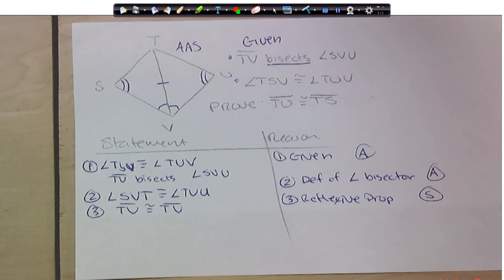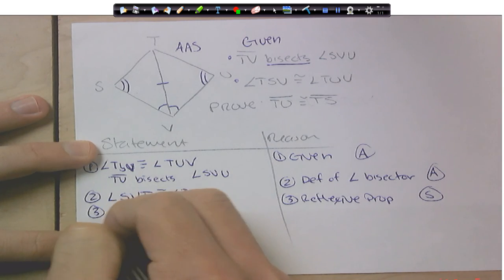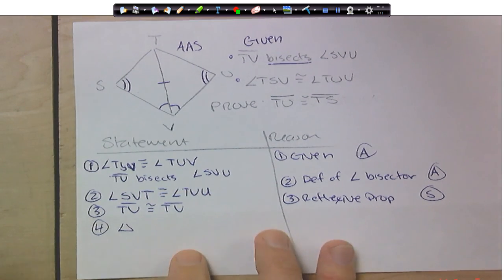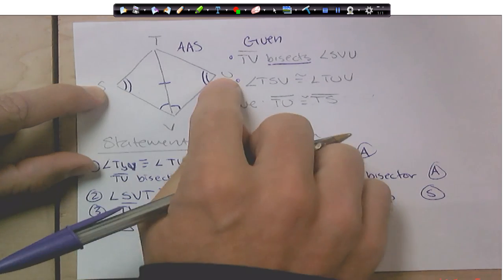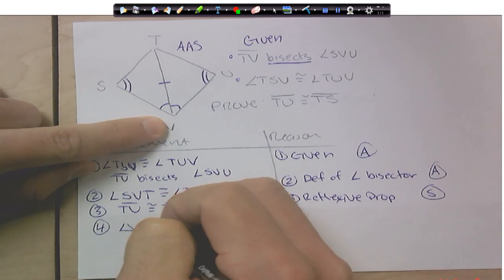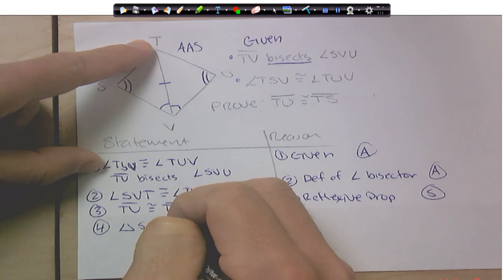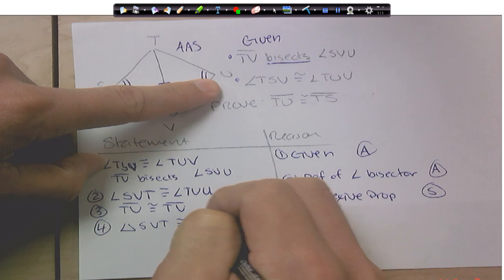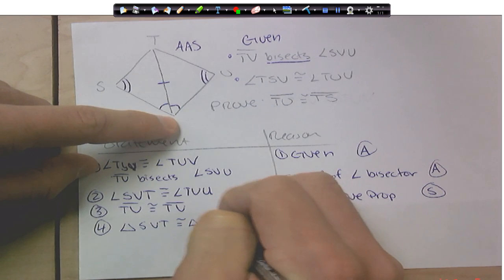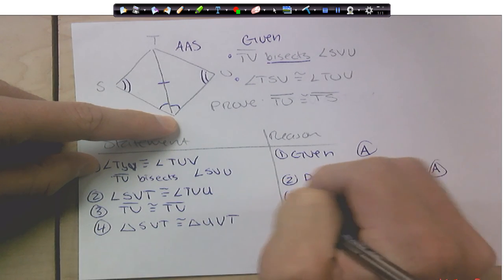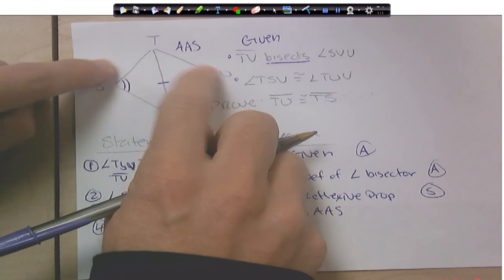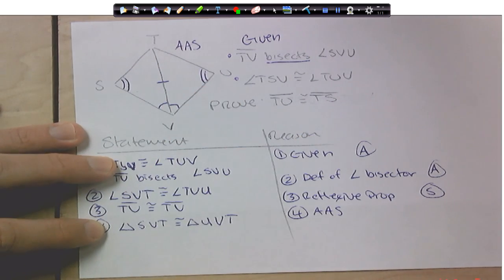So, now I have my angle angle side. All I have to do is go ahead and prove the triangle is congruent. So, step four, triangle, we have to be very careful I write this in the correct order. S is going to match with U, V with V, T with T. So, SVT is congruent to triangle UVT. And this is because of angle angle side. Now, once the triangle is proved congruent, now I can actually say that these two segments, these corresponding segments, are in fact congruent.